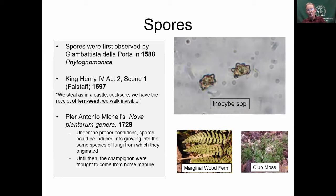Spores — there were no microscopes until van Leeuwenhoek really perfected the microscope in the 17th century, but spores were first discovered in 1588, which happens to be the year of the Spanish Armada — an easy thing to remember. Before that, people thought the seed of ferns and club mosses must be invisible because they knew it had to be there. In Shakespeare's Henry the Fourth from 1597, Falstaff uses the line that they'd have fern seed in their pockets to be invisible.